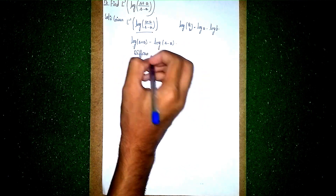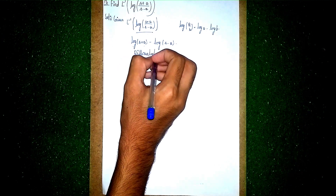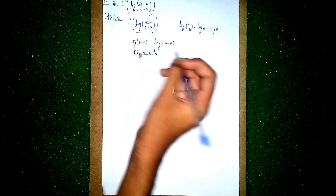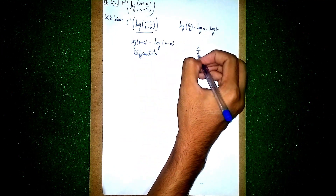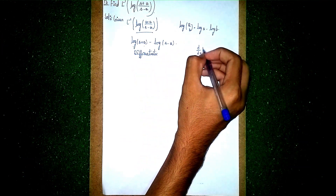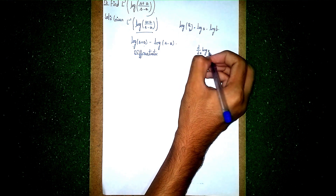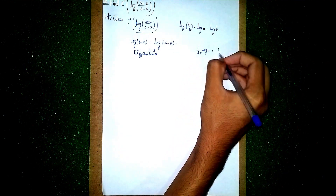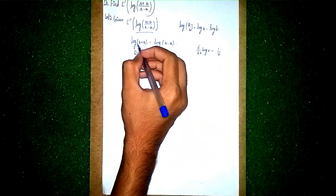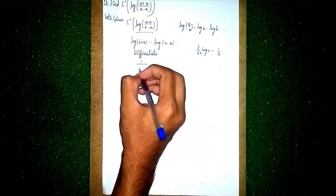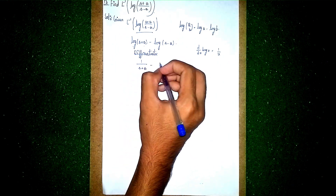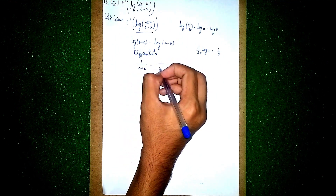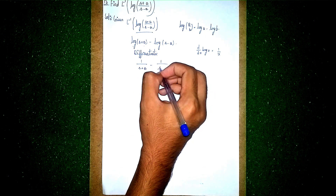Differentiating: using the formula d/dx of log x equals 1/x, the derivative becomes 1/(s + a) minus 1/(s - a).